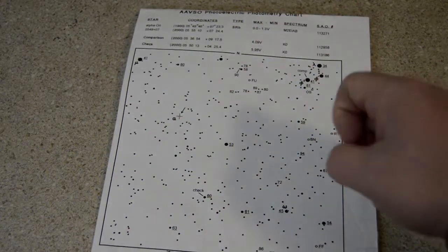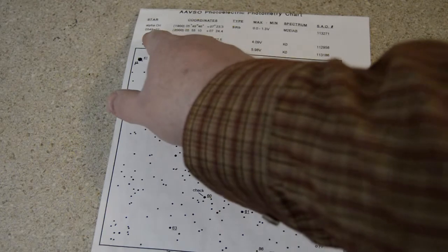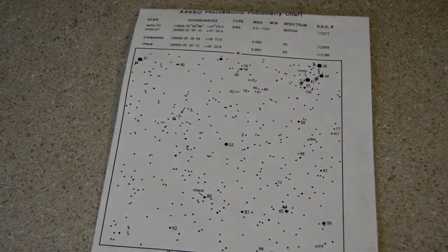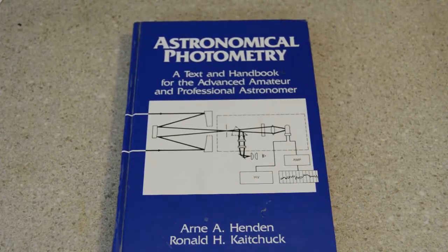And these charts that the AAVSO puts out have your magnitudes listed for your comparison star and your check star. I guess coordinates and so forth too, in case you needed them.